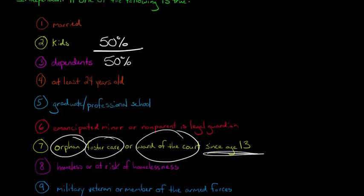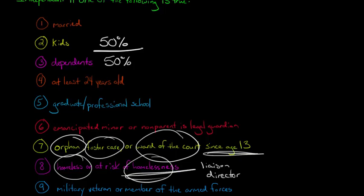And also if you are currently homeless or at risk of homelessness, in that case you also are an independent student. However, there is going to need to be some documentation for that. Basically you need your school liaison or the director of a homeless shelter to certify that yes, you are in fact homeless or at risk of homelessness.